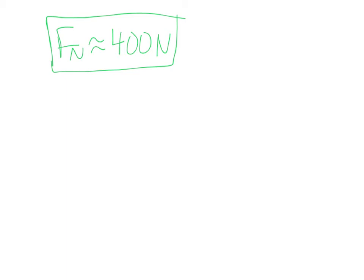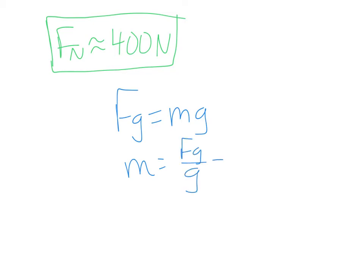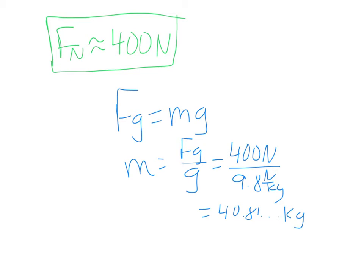The second thing the problem asks for is the mass of the table. Weight equals mass times g, so mass equals weight divided by g: 400 N ÷ 9.8 N/kg = 40.81... kg. With one significant figure, the mass of the table is approximately 40 kg.